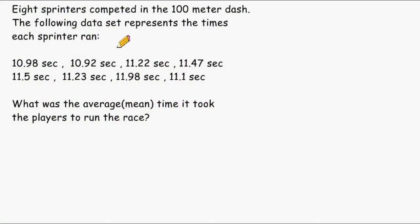This problem reads that eight sprinters competed in the 100 meter dash. The following data set represents the times each sprinter ran. So here are the eight times ran by the eight sprinters, and what we have to do is find the average or the mean time it took the players to run the race.